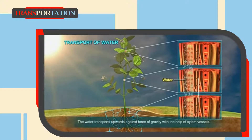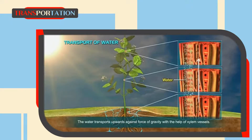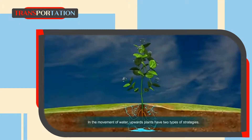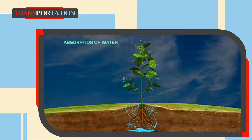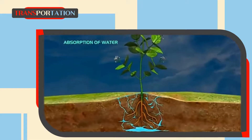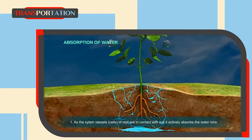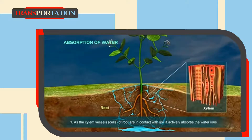Water is transported upward against the force of gravity with the help of xylem vessels. In the upward movement of water, plants have two types of strategies. The first is absorption of water: as the xylem vessels of roots are in contact with the soil, they actively absorb water ions.